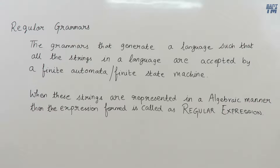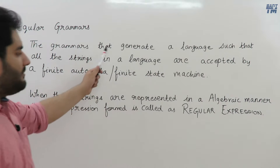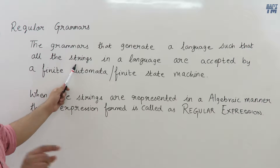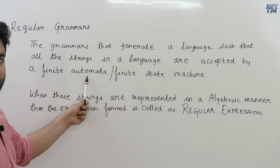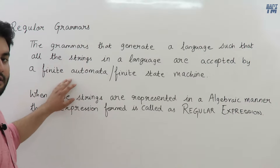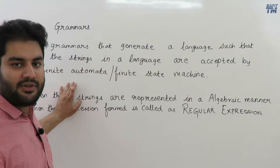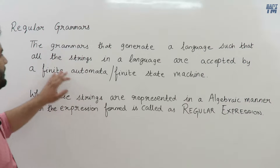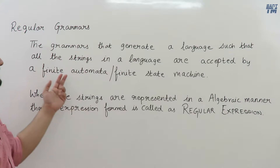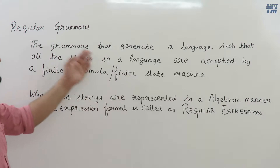In this video we will be discussing a short introduction to regular expressions, regular grammar, and regular languages. Regular grammars are grammars that generate a language such that the strings in that language are accepted by a finite automata. In the Chomsky classification, all type-3 grammars are called regular grammars and are represented by a finite automata.